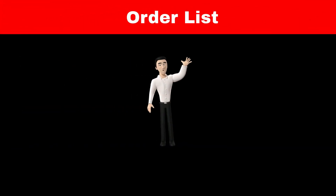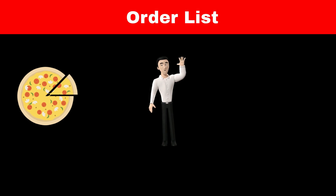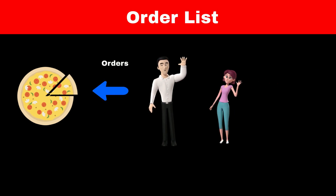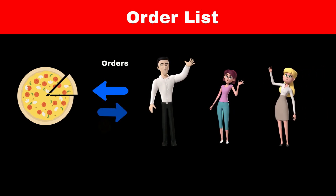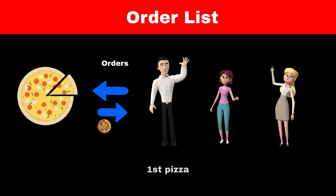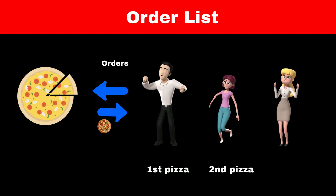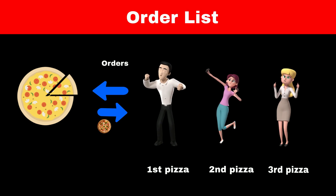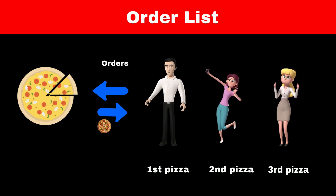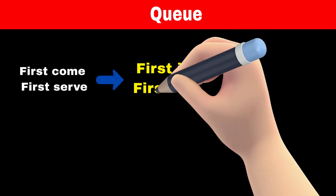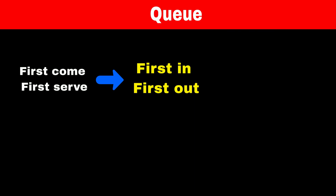Now suppose Ross places an order for pizza, and after Ross, Monica and Rachel place an order. Whenever the first pizza is ready, we will deliver it to Ross, the second pizza to Monica, and the last pizza to Rachel. Whoever places the order first will get the pizza delivery first. This operation is called first in, first out, and the data structure which allows us to perform this operation is called a queue.